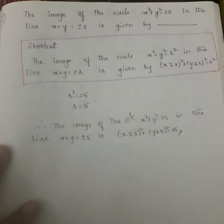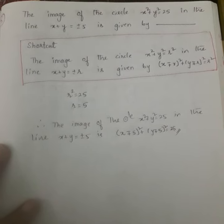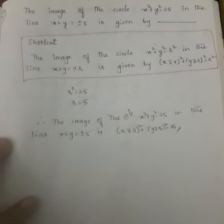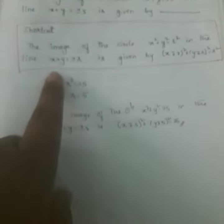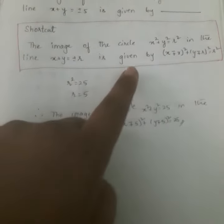In order to solve this problem, in M set and IAT we have one shortcut. The shortcut is: the image of the line x² + y² = r² in the line x + y = ±r is given by...